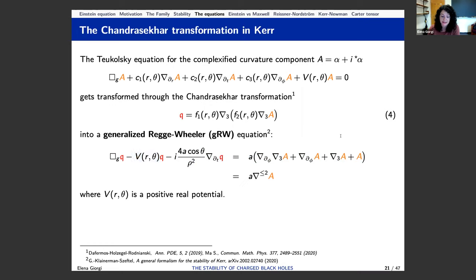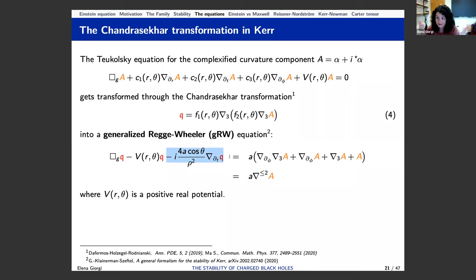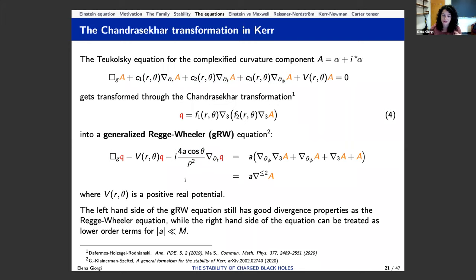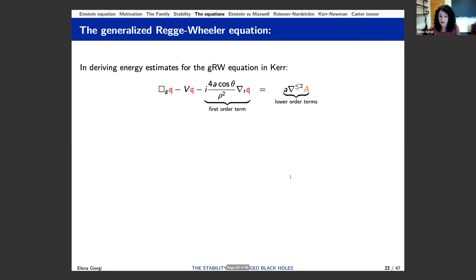You may really worry about this first-order term, because the Teukolsky equation was really problematic precisely because of first-order terms that didn't allow you to study the equation in general. But in fact, the left-hand side of this equation still has good divergence properties, as for the Regge-Wheeler equation. The right-hand side can be treated as lower-order terms for small angular momentum. To see why: to derive energy estimates for an equation of this form with this type of first-order term, we want to multiply by Nabla_t Q-bar and take the real part. If you do that, the first-order term gets cancelled because of the structure given by i times the real function times Nabla_t. The lower-order terms can be absorbed for small angular momentum using the Morawetz method.